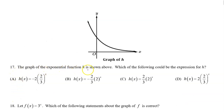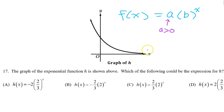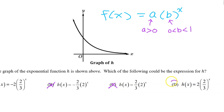Number seventeen: the graph of the exponential function h is shown above. Which of the following could be an expression for h? Because the curve is above the x-axis, we know that a is positive, so we can eliminate options A and B — we see the negative two and negative two-thirds. We also notice that h is an exponential decay function, decreasing from left to right, meaning b is between zero and one. Option C has a b value of two, which is greater than one, so C is not the answer. Therefore, D must be the answer — the only option with a positive a value and a b value between zero and one.